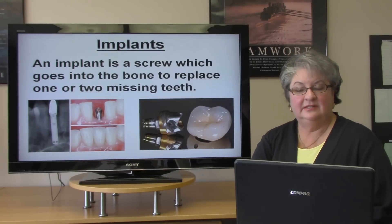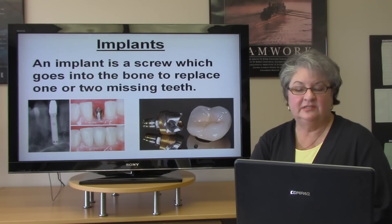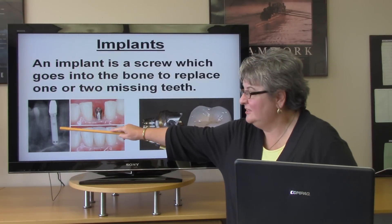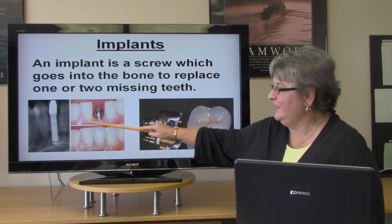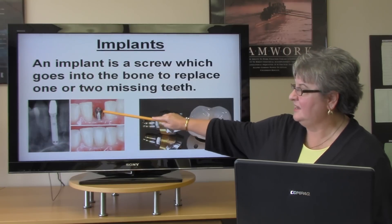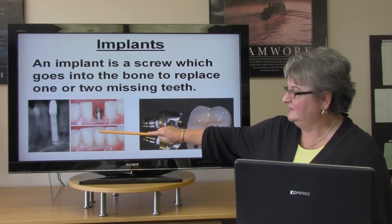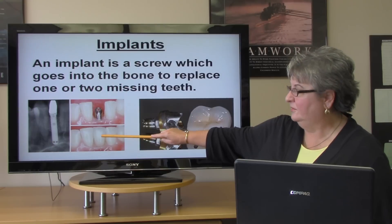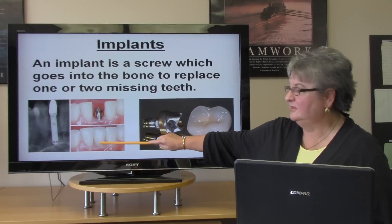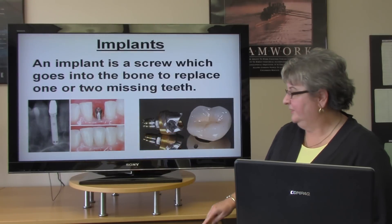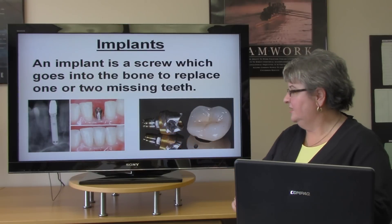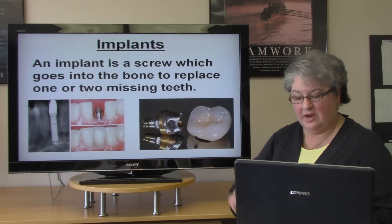The next is an implant. An implant is a screw which goes into the bone to replace one or two missing teeth. Here is what the implant looks like on an x-ray, and here is the implant top as it sticks out of the gum. The final result is a full crown restoration that goes over the implant so that it looks like a natural tooth.